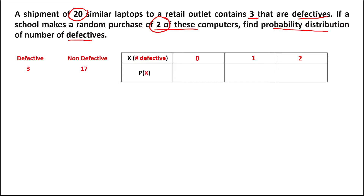To find the probability for each number of defective computers: for 0 defective computers, we choose 0 from the defective computers — that is 3 choose 0 — then times 17 choose 2 for the non-defective computers, since both computers must be good. This is all over 20 choose 2, the total number of ways to choose 2 computers.